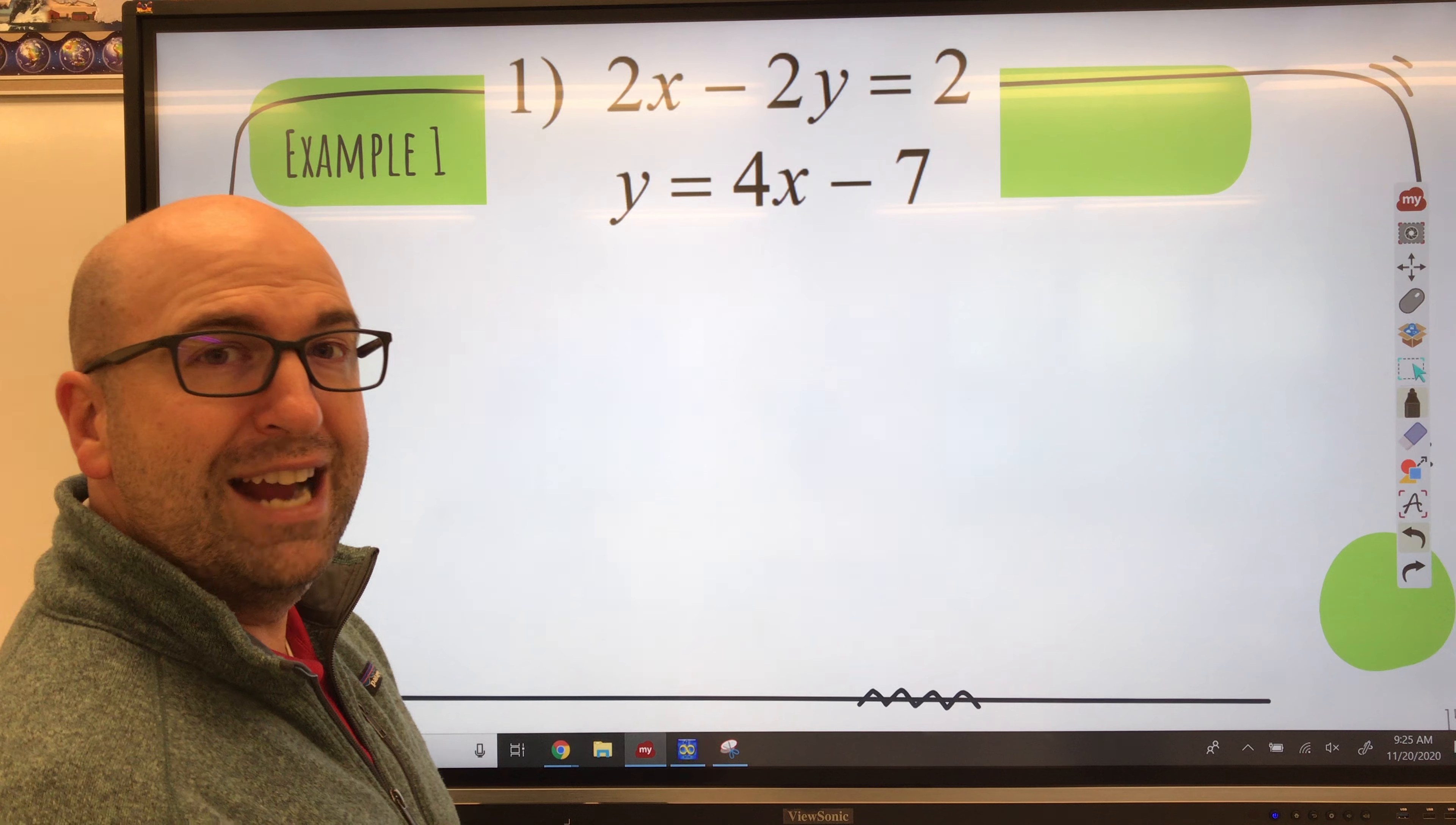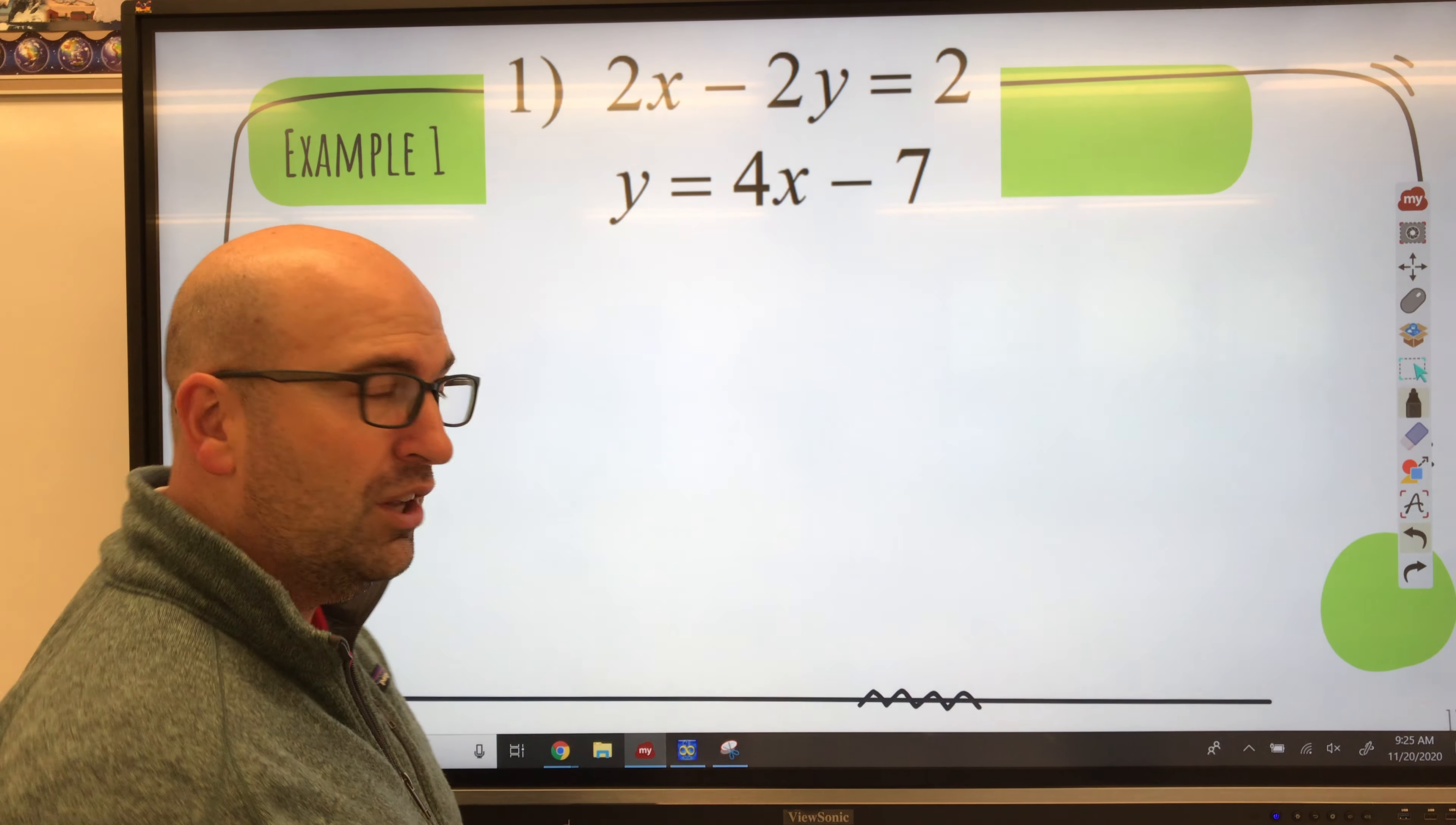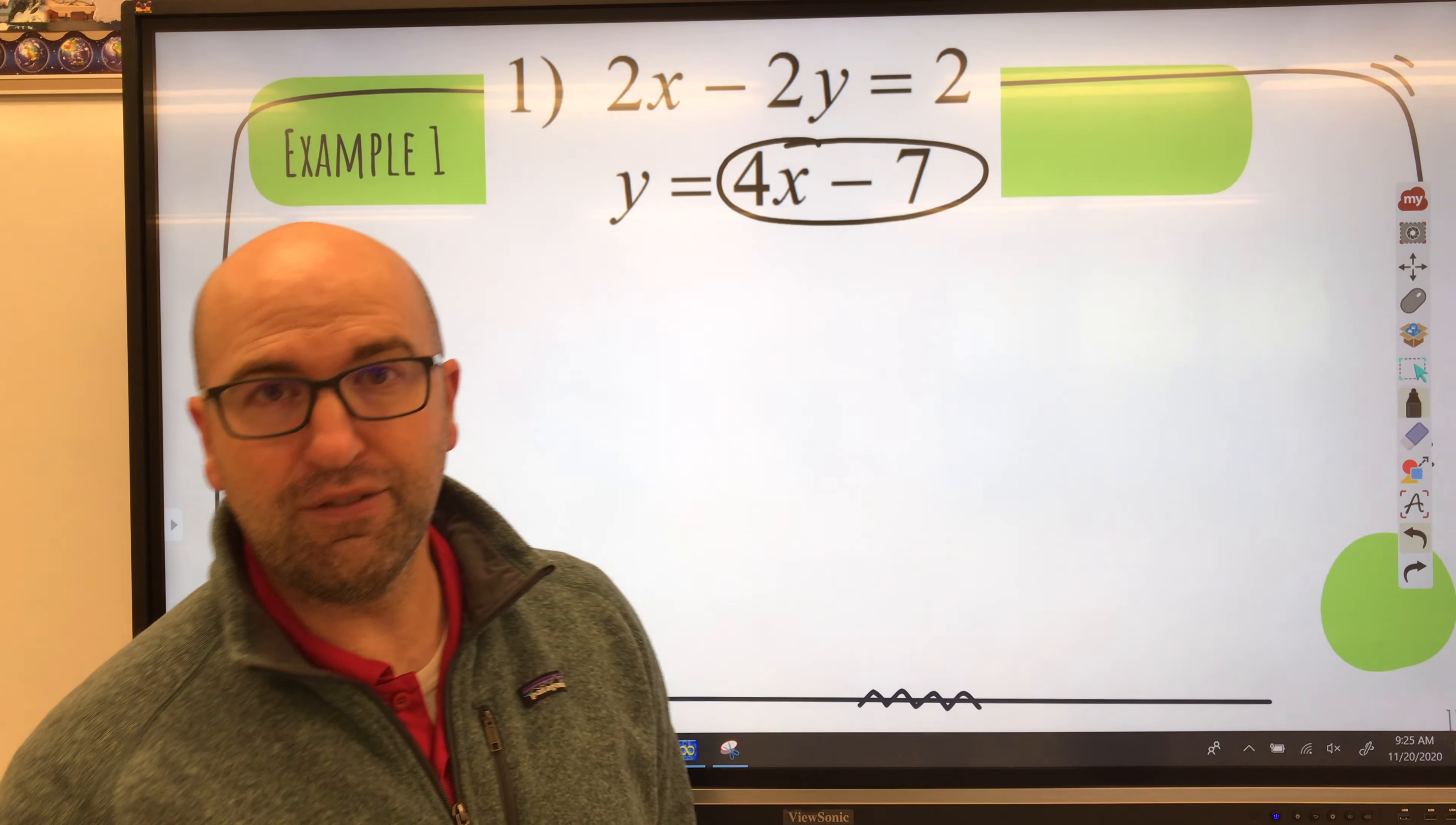So the first thing I said is make sure one of them is solved for y. And right here, you can see this problem says y equals 4x minus 7. So that one's solved for y. Then it said take what y is equal to. Well, y is equal to 4x minus 7.